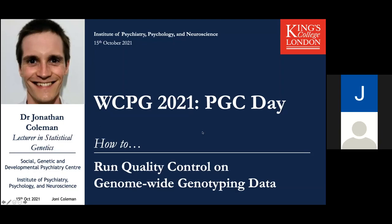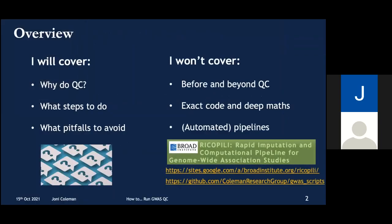Hello, I'm Jonny Cohen and in this brief presentation I'm going to discuss some key points concerned with running quality control on genome-wide genotype data, which is a common first step in running a GWAS. I'm going to provide a theoretical overview addressing the overarching reasons why we need to do QC, highlighting some common steps and discussing a few pitfalls the data might throw up.